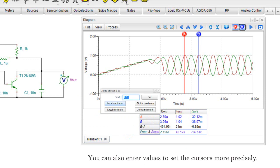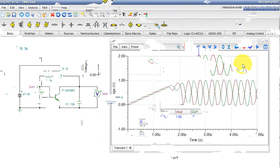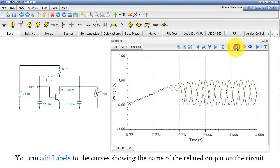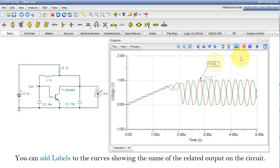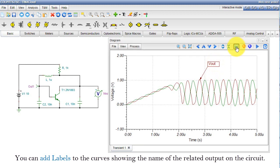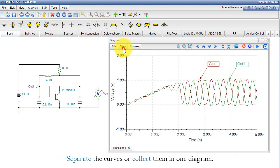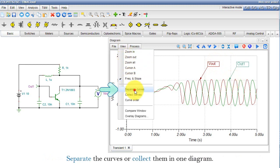You can also enter values to set the cursors more precisely. You can add labels to the curves, showing the name of the related output on the circuit. Separate the curves or collect them in one diagram.